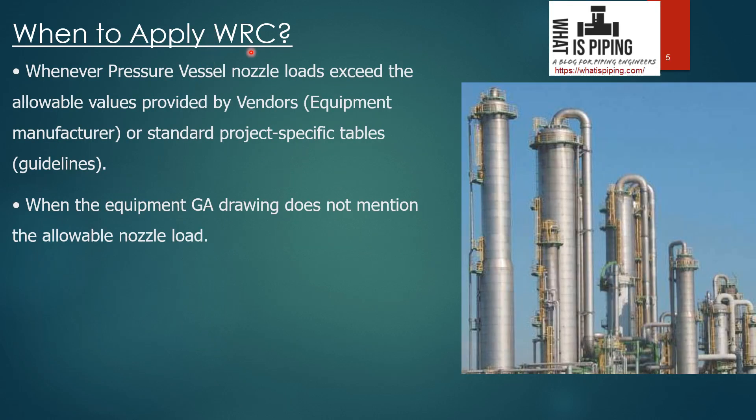When should WRC be applied? Whenever pressure vessel nozzle loads exceed the allowable values provided by vendors, piping stress engineers must limit equipment nozzles within certain values given either in GA drawings by the equipment manufacturer or by standard project-specific tables. Whenever nozzle loads calculated in software like CAESAR II or Autopipe exceed those allowable values, the piping stress engineer has the option to use WRC 537 or WRC 297 or other FEA tools to calculate the stresses.